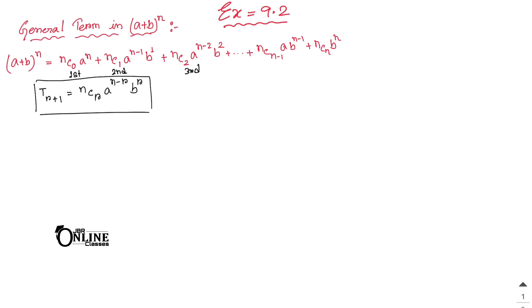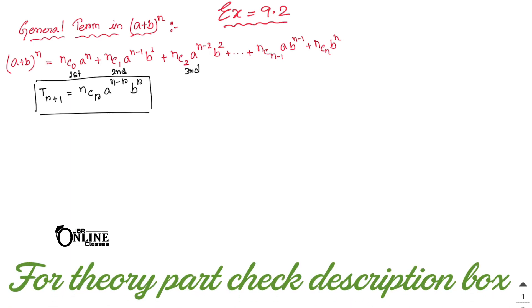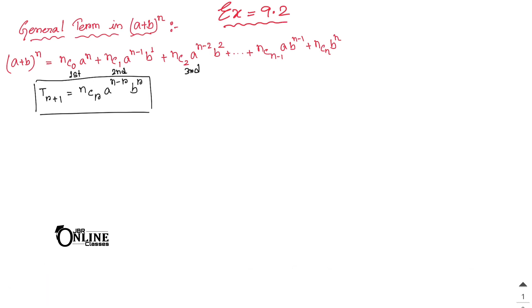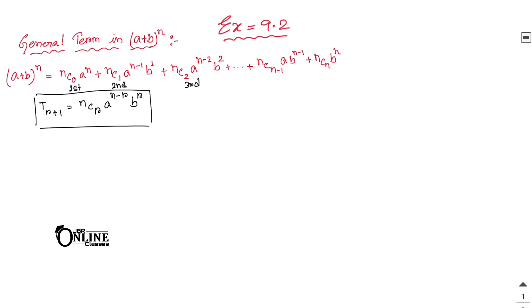The first problem says: write the general term in the expansion. First you have to know the formula to find the general term. Suppose you have (a + b) whole to the power n. According to the binomial theorem, the formula for the general term is T(r+1) = nCr · a^(n−r) · b^r.